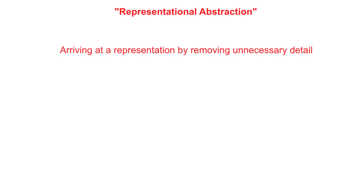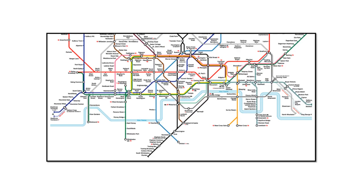There are a couple of forms of abstraction you need to be aware of. One is representational abstraction — this is the idea of arriving at a representation which is acceptable by removing unnecessary detail. A nice simple way to illustrate this is the example of the famous London Underground map. Lots of unnecessary detail has been removed, and other necessary detail has been added. The London Underground tube map doesn't even follow the overlying geography — the River Thames is heavily distorted and distances are not consistent.